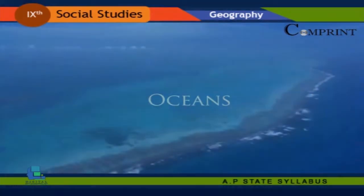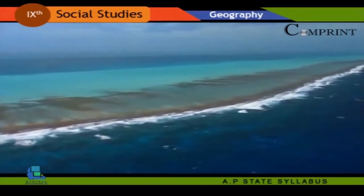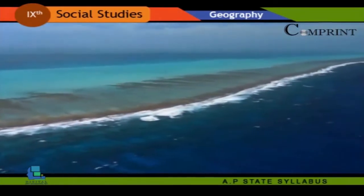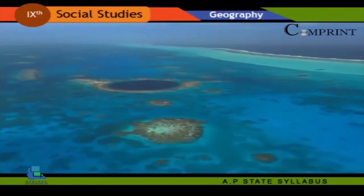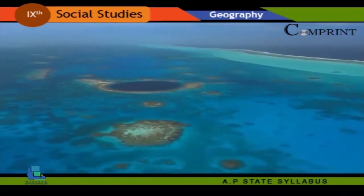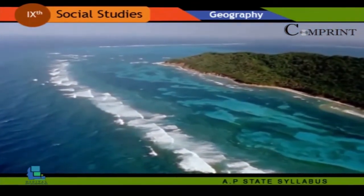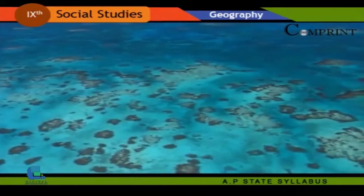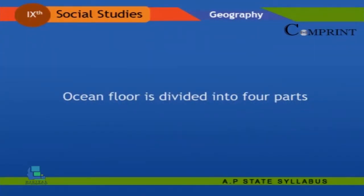Oceans: The huge water bodies are called oceans. Geographers have described the oceanic part of the Earth into five oceans — the Pacific Ocean, the Atlantic Ocean, the Indian Ocean, the Southern Ocean, and the Arctic Ocean. A sea is a body of saline water partly or fully enclosed by land. The major oceanic divisions are defined in part by the continents, various archipelagos, and other criteria.